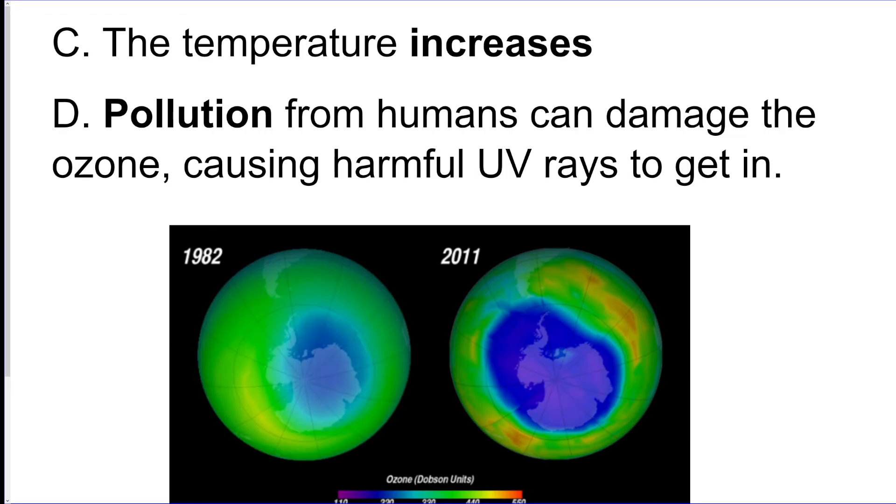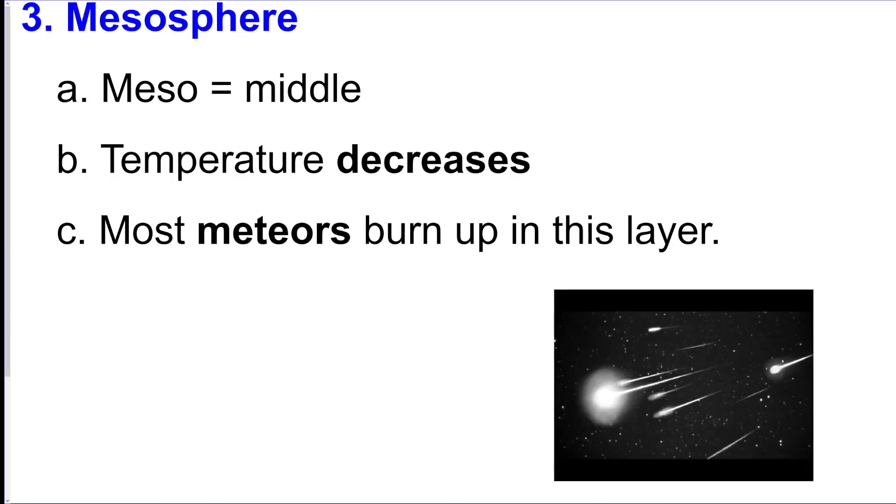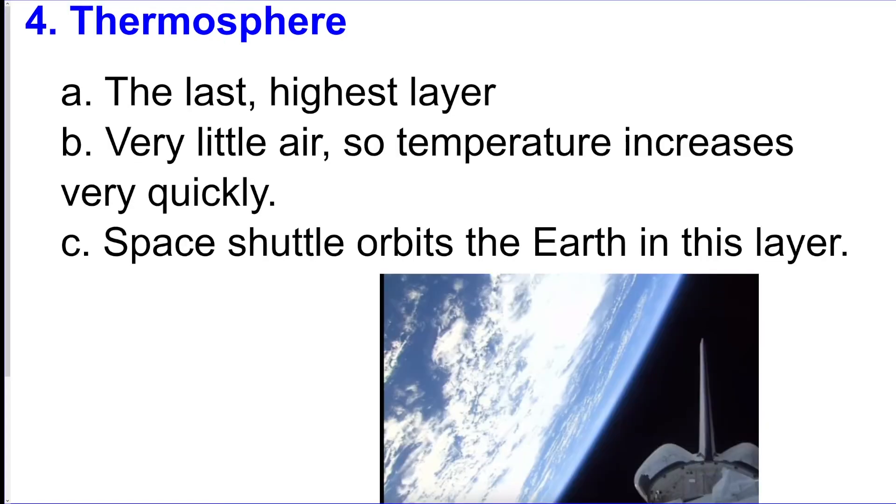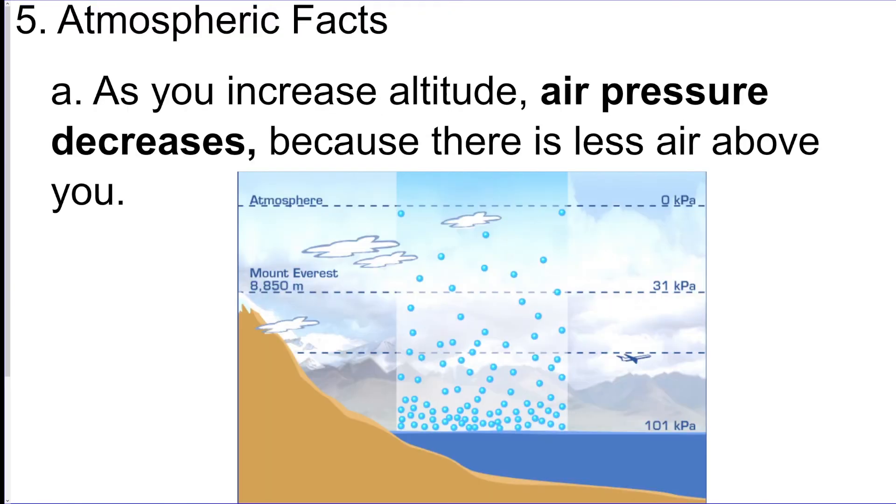The mesosphere is the next layer. This is where most of our meteors are going to burn up. Sometimes the meteors are too big and they eventually get through, but it's very cold in this layer. And then lastly, the thermosphere is the highest layer. There's not that much air here. This is where the space shuttle orbits and it gets very warm.